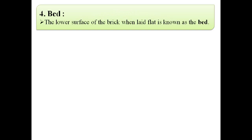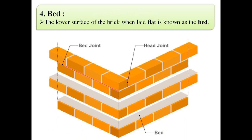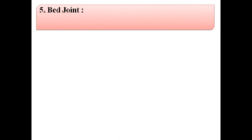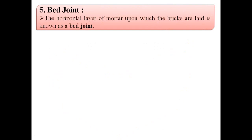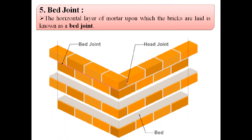The next term is bed. As shown in this image, the lower surface of the brick when laid flat is known as the bed. The fifth term is bed joint — the horizontal layer of mortar upon which the bricks are laid. This horizontal layer of mortar is known as the bed joint.